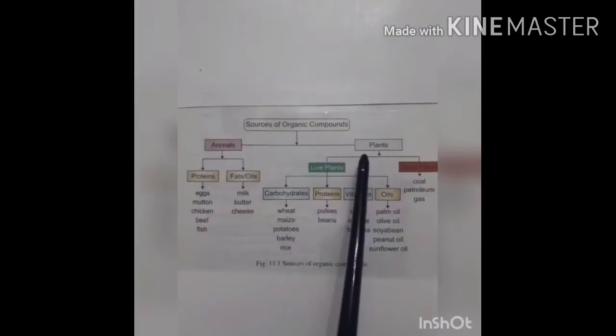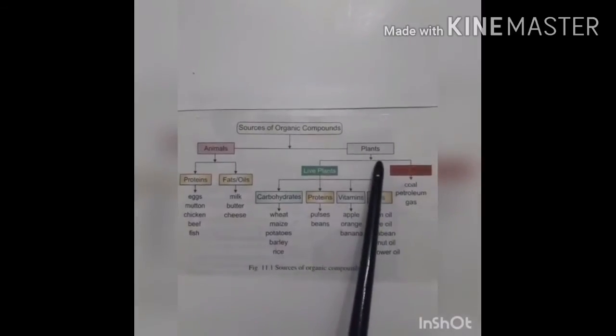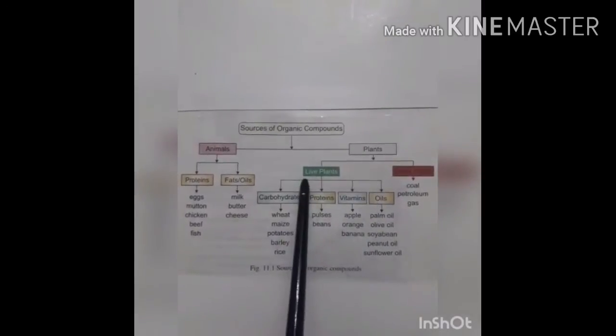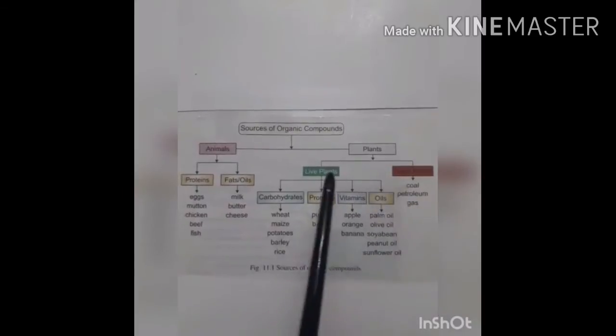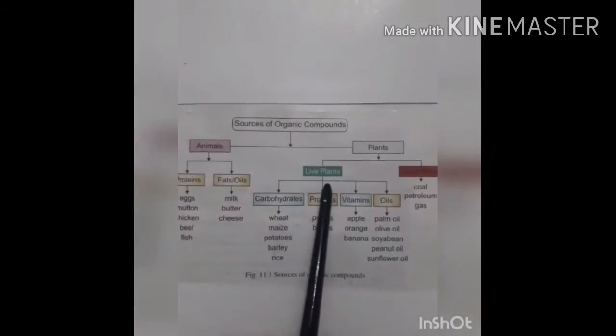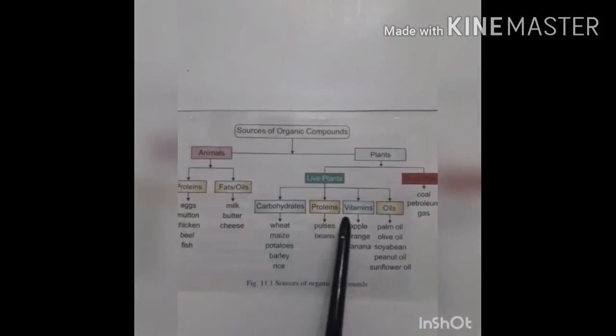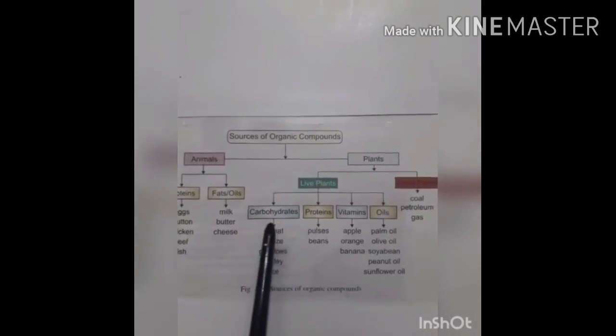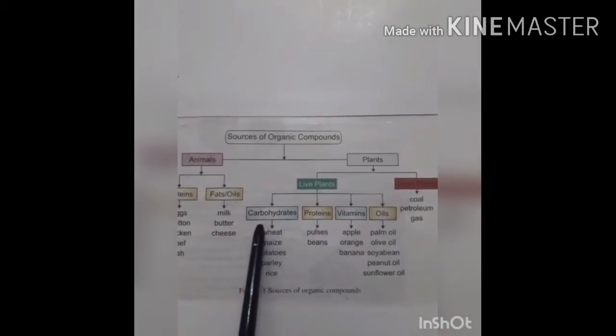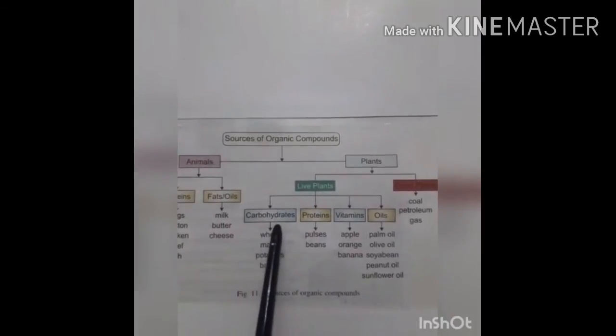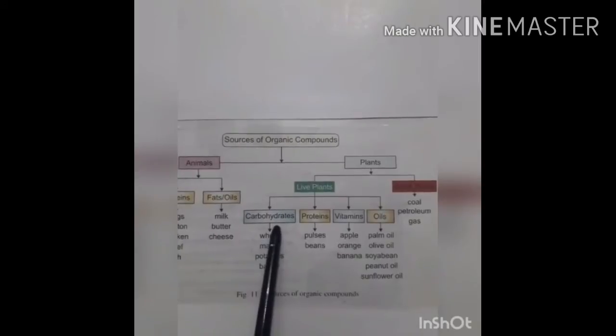The second source of organic compounds are plants. Plants may be live plants or dead plants. Live plants synthesize macromolecules of carbohydrates, proteins, vitamins, and oils. Glucose is the basic unit of carbohydrates which is synthesized by plants by the process of photosynthesis.